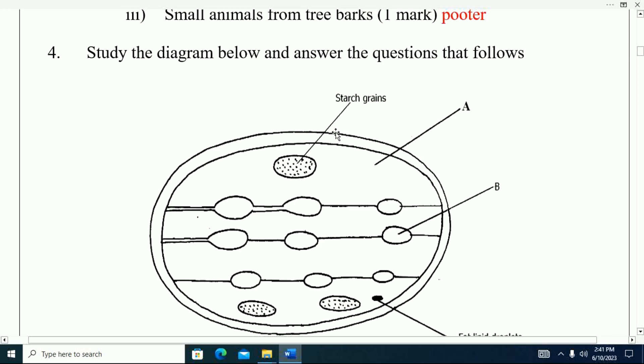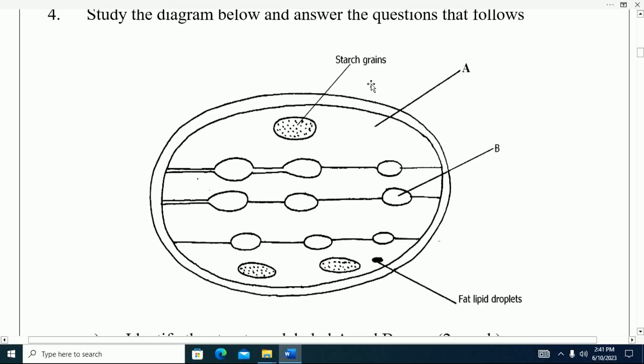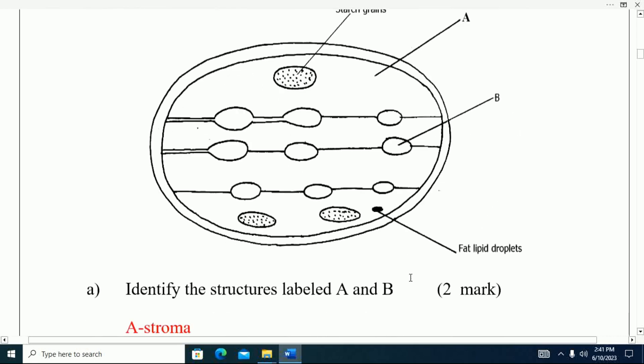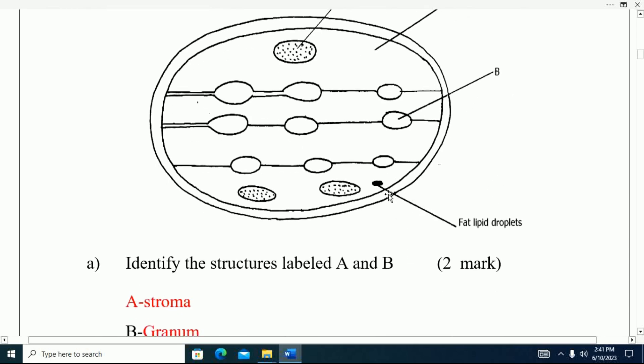Let's go to question number four. You are told study the diagram below and answer the questions that follow. You can see the diagram here. It has a starch grain, part labeled A, part labeled B, and another part with fat lipid droplets.